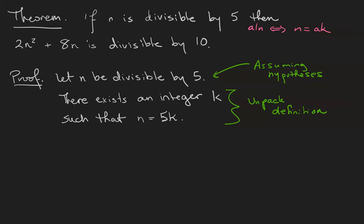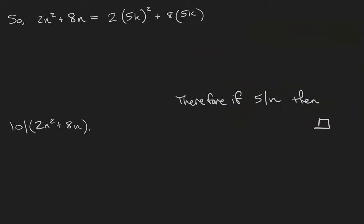That means there exists an integer k such that n equals 5k. Remember, that's just the definition of divisibility. So just like in the last video, we're going to take our n, which is now determined to have the form 5k, and plug it into the expression 2n² + 8n to show that the result has to be divisible by 10, because that's what we're trying to prove. Let's do some algebra.